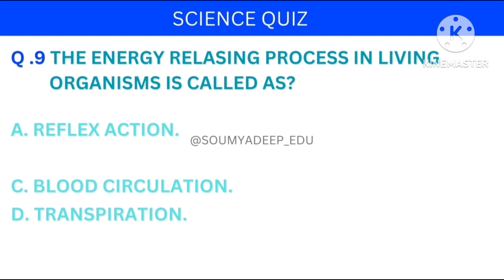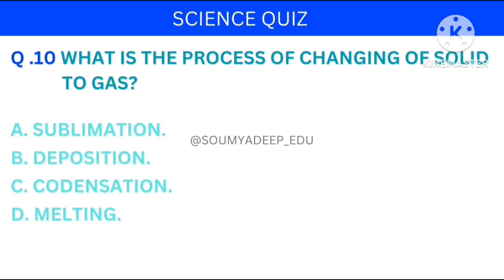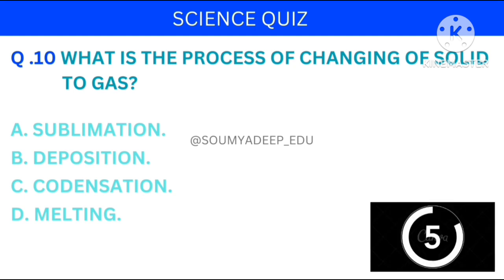What is the process of changing of solid to gas? The options are: sublimation, deposition, condensation, melting. Your time starts now.